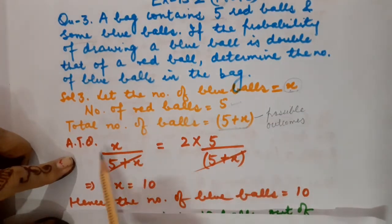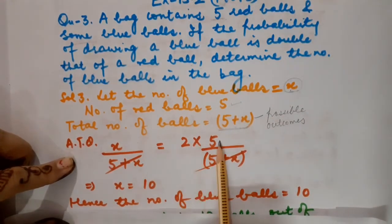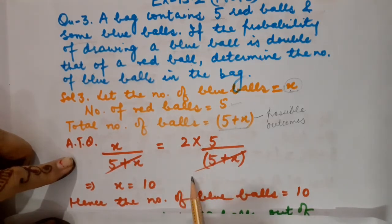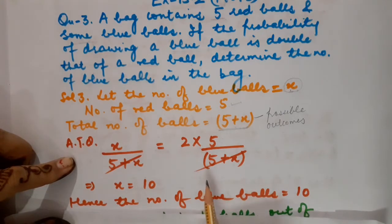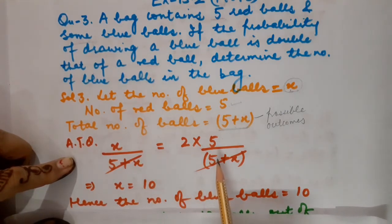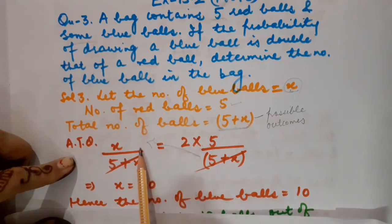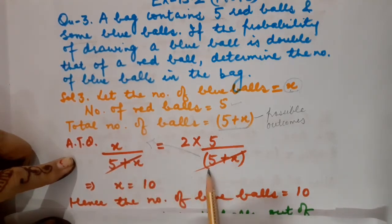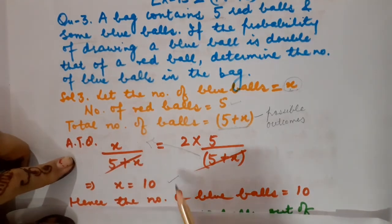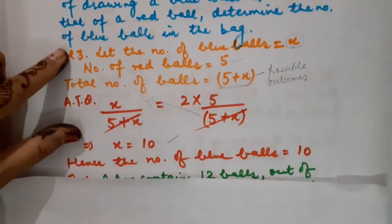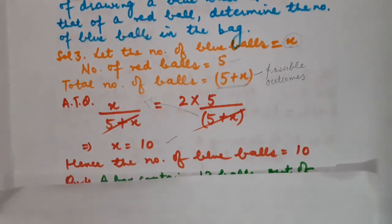So this is the equation formed. When I bring 5 plus x to the left hand side, they cancel out. I can also solve it as 2 into 5 equals 10 upon 5 plus x, then cross multiply. Either way, x is equal to 10. So the number of blue bowls is equal to 10.